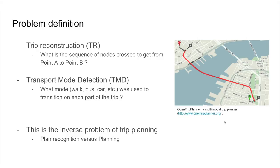So if I'm showing here an example of a trip, it will simply be to determine which road it takes to start from point A to get to point B. Transport mode detection, on the other hand, is to assign a transport mode to each of the segments of a trip.